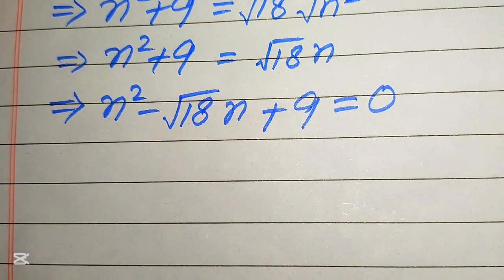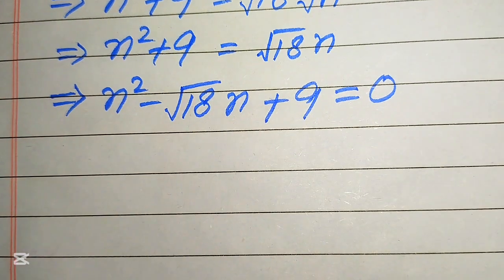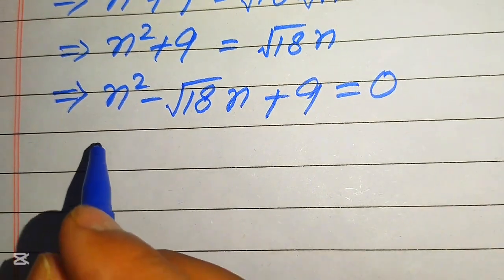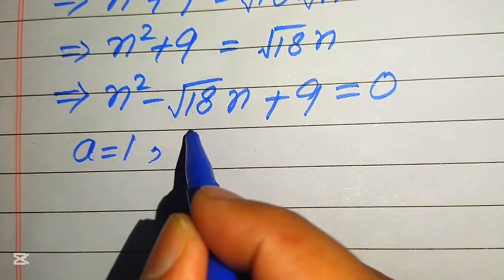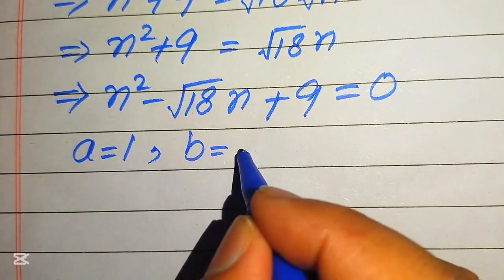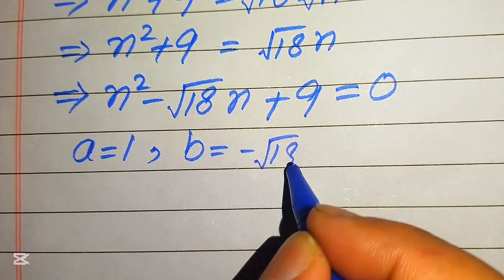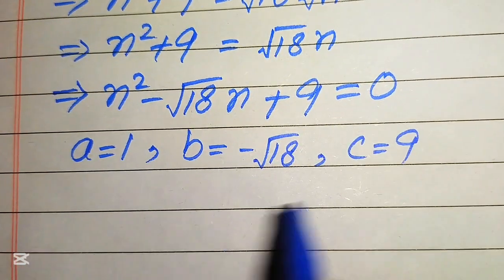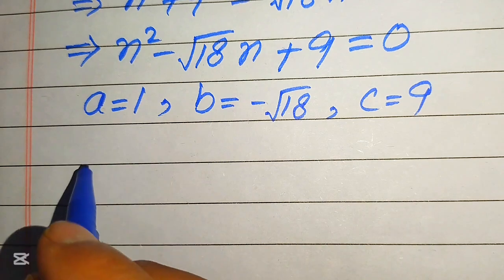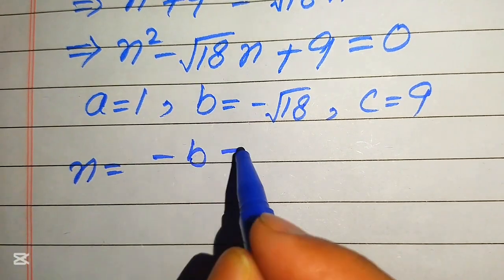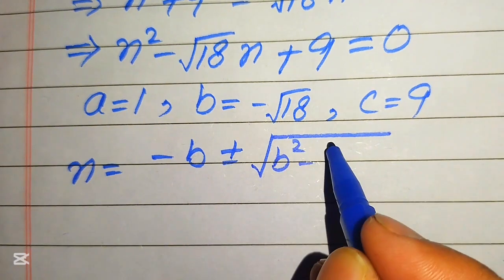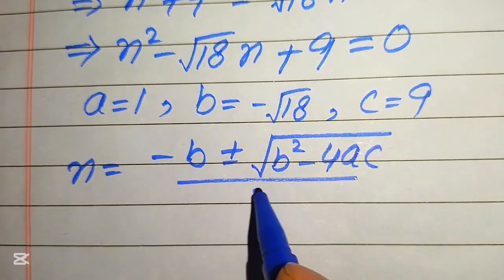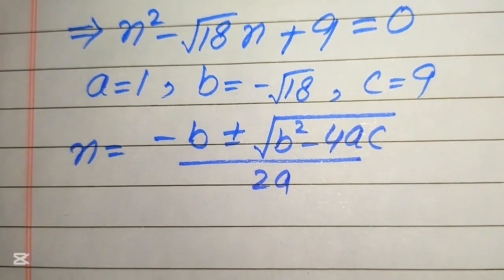This equation is quadratic in n, so we apply the quadratic formula. The coefficients are: a = 1, b = −√18, and c = 9. The quadratic formula is: n = (−b ± √(b² − 4ac)) / (2a).